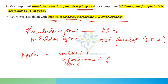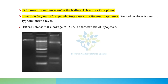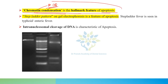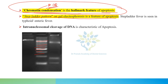Keywords associated with apoptosis are caspases, cytochrome C, and embryogenesis. Chromatin condensation is the hallmark feature of apoptosis — an MCQ to remember. The step ladder pattern on gel electrophoresis signifies apoptosis. Intranucleosomal cleavage of DNA is characteristic of apoptosis.